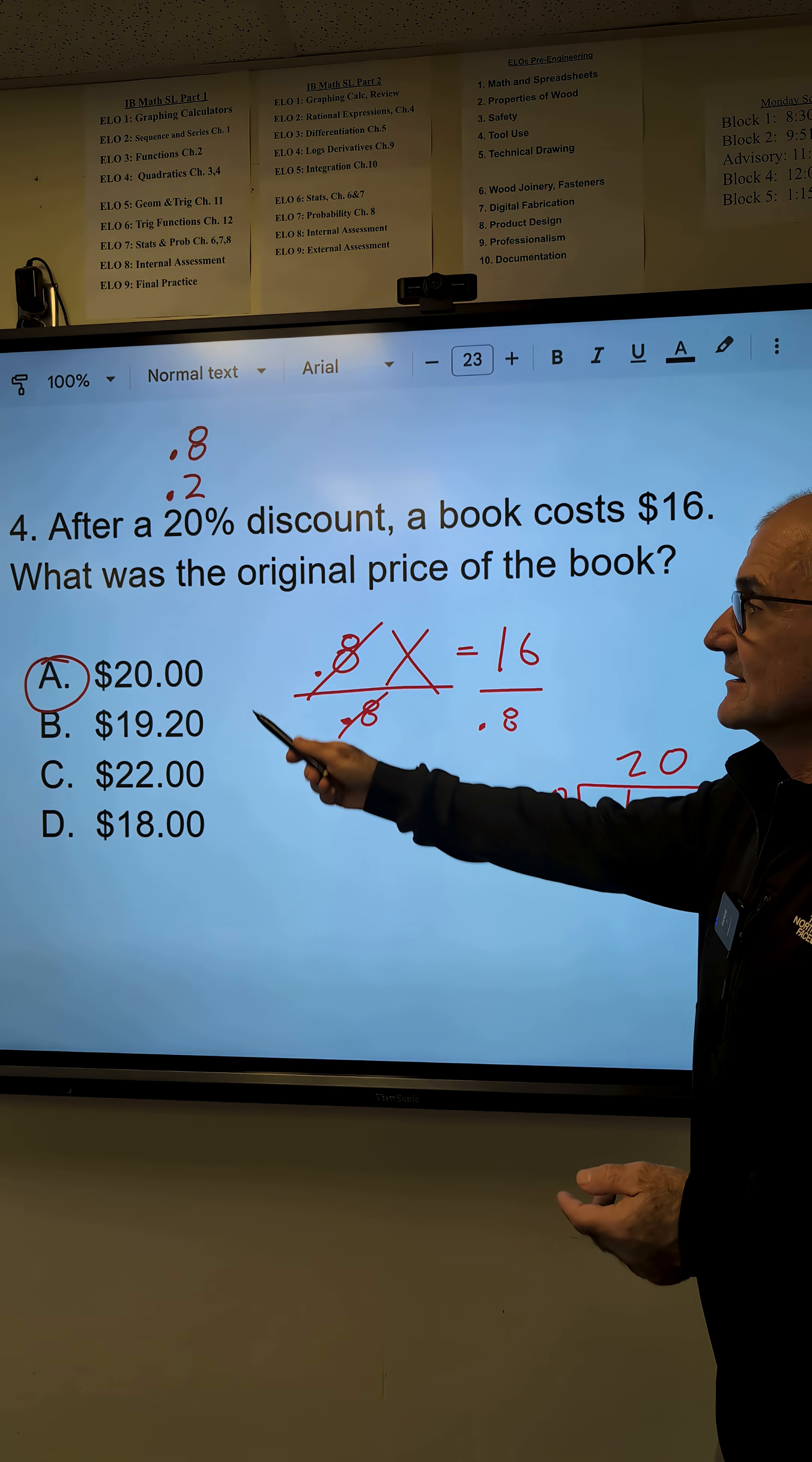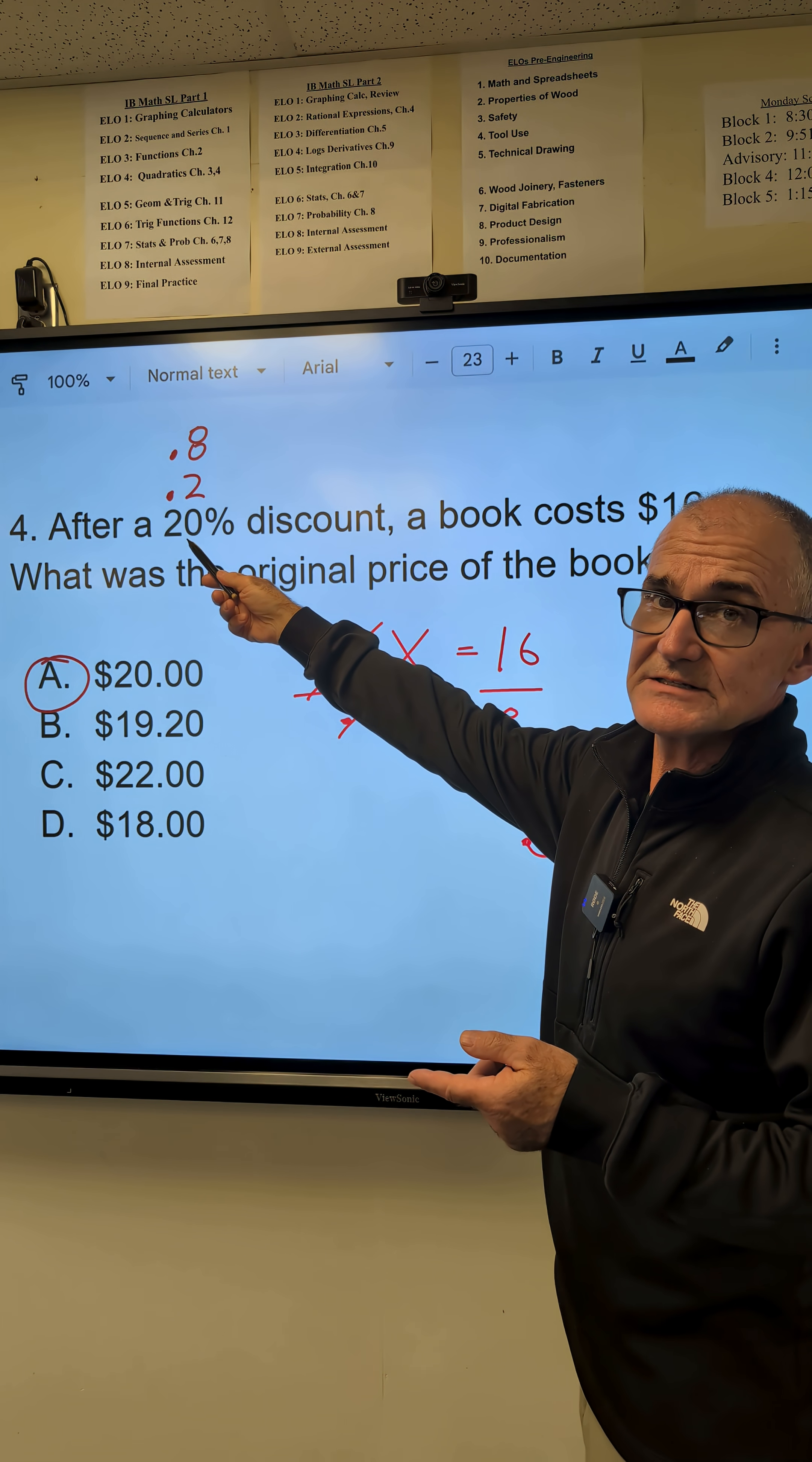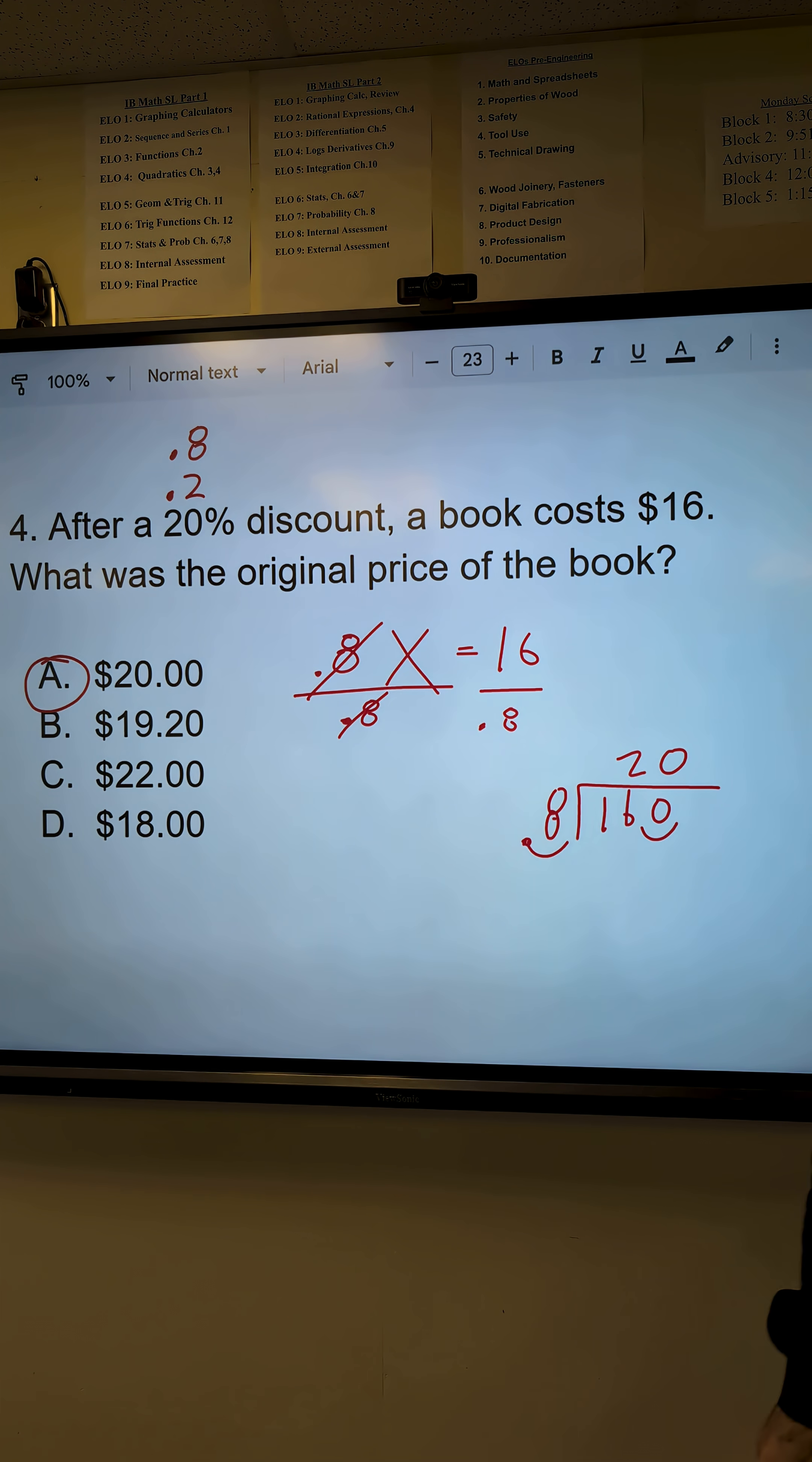Let's double check that. What is the original price? $20. Times the 20% discount, $4 off. 20 minus that $4 gives me the 16.